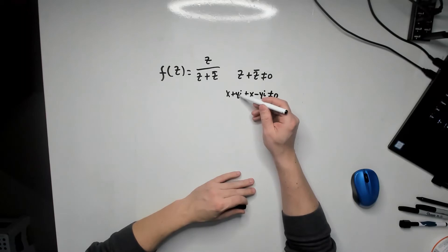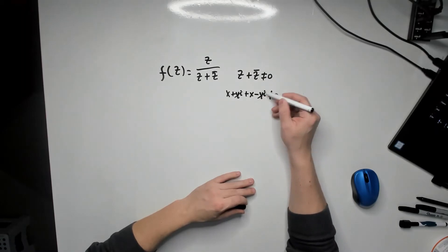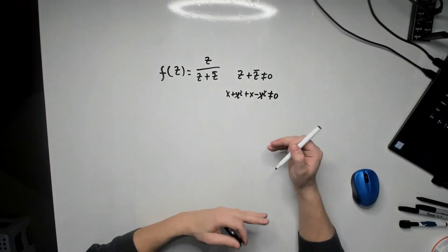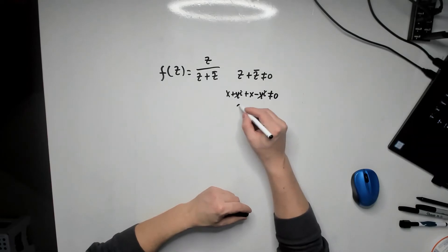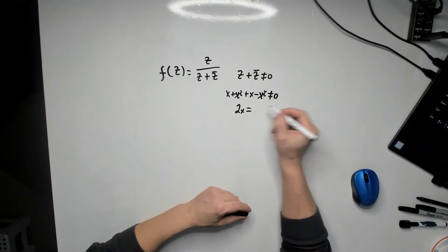Observe that clearly yi and then also negative yi will cancel off because the signs are opposite. Add up the x's. So 2x, in other words, cannot be equal to 0.